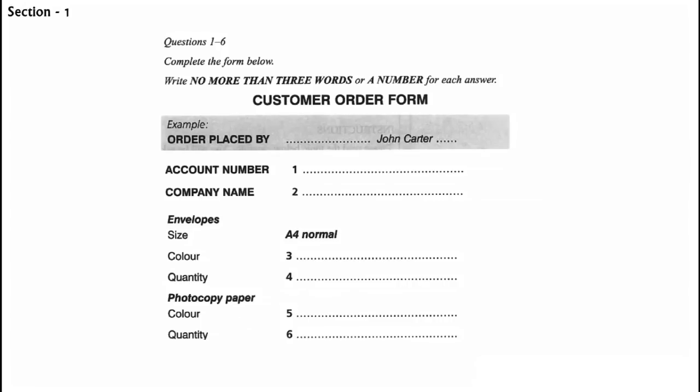You will see that there is an example which has been done for you. On this occasion only, the conversation relating to this will be played twice. Thank you for calling Millennium Office Supplies. If you would like to place an order, please press 1. Your call has been placed in a queue. A customer service operator will be with you shortly. Gina's speaking. How can I help you? Oh, hello. I'd like to order some stationery, please. And who am I speaking to? John Carter. The man says his name is John Carter.